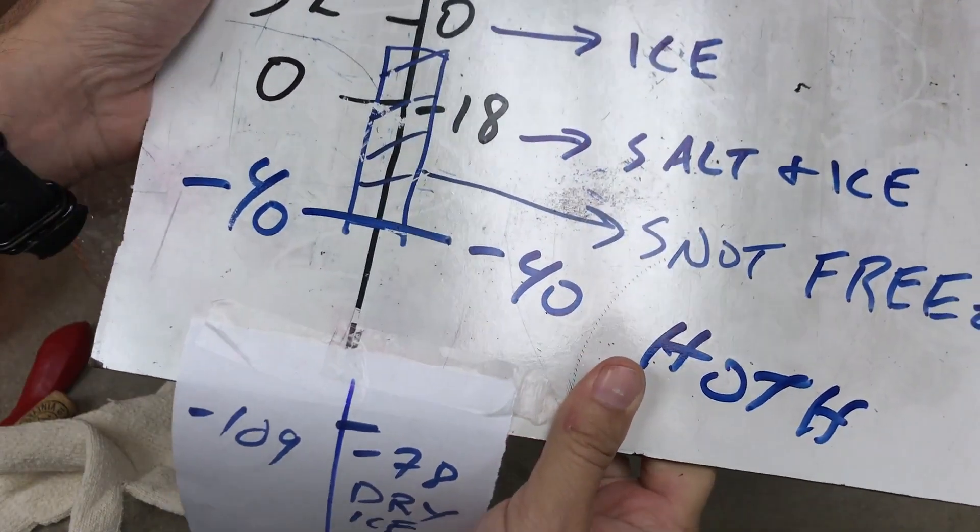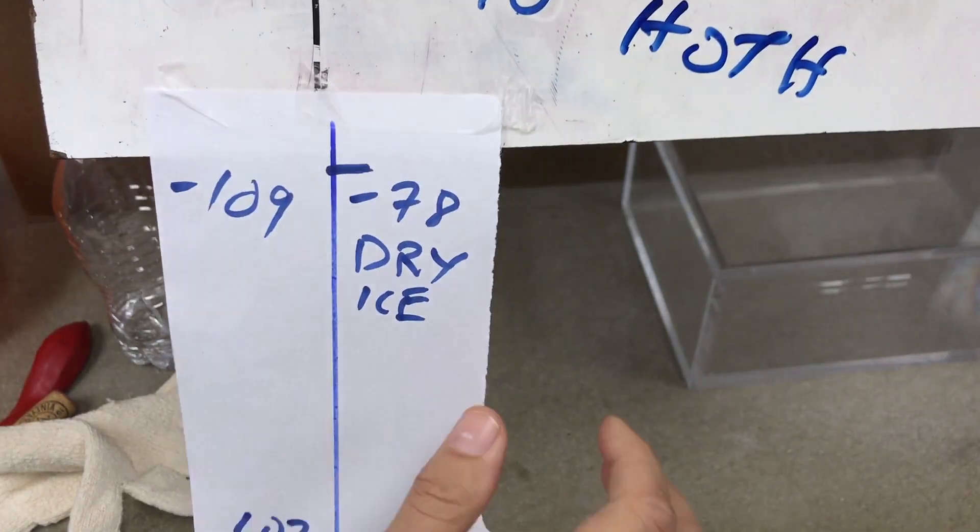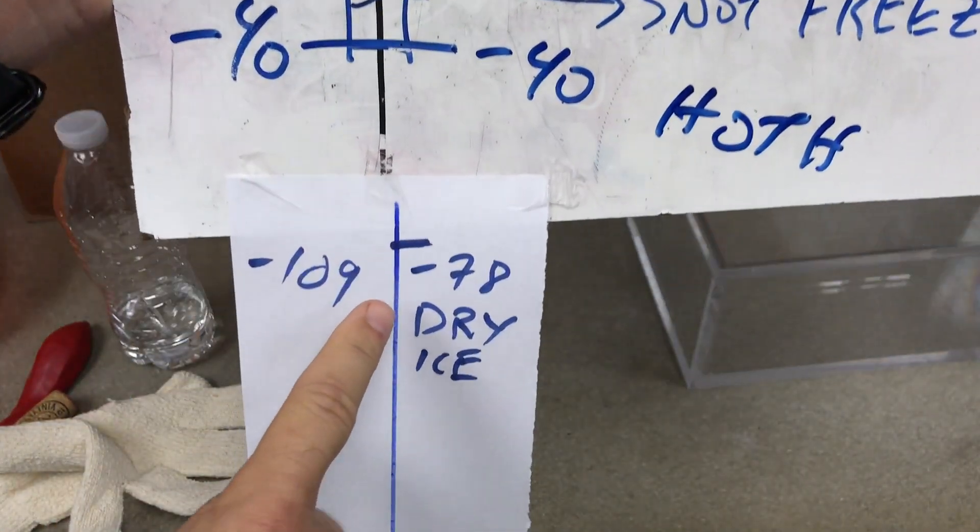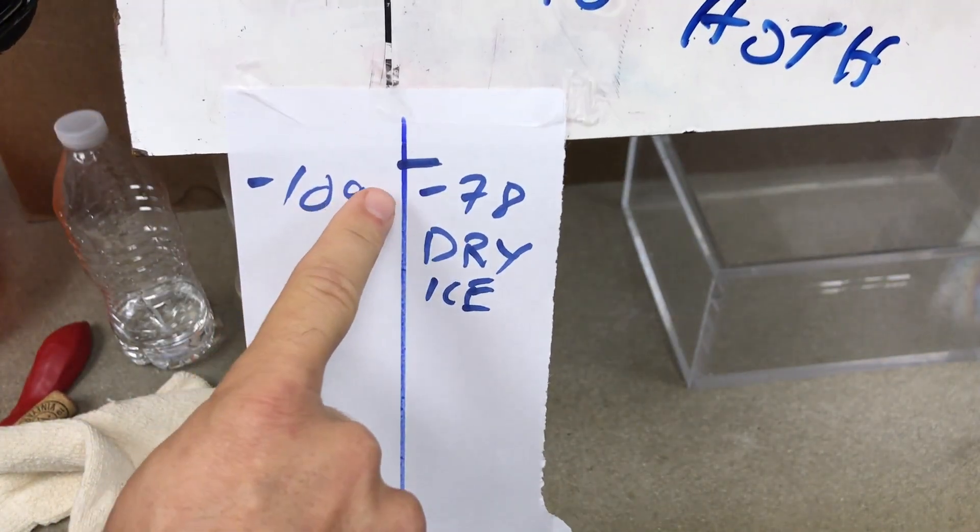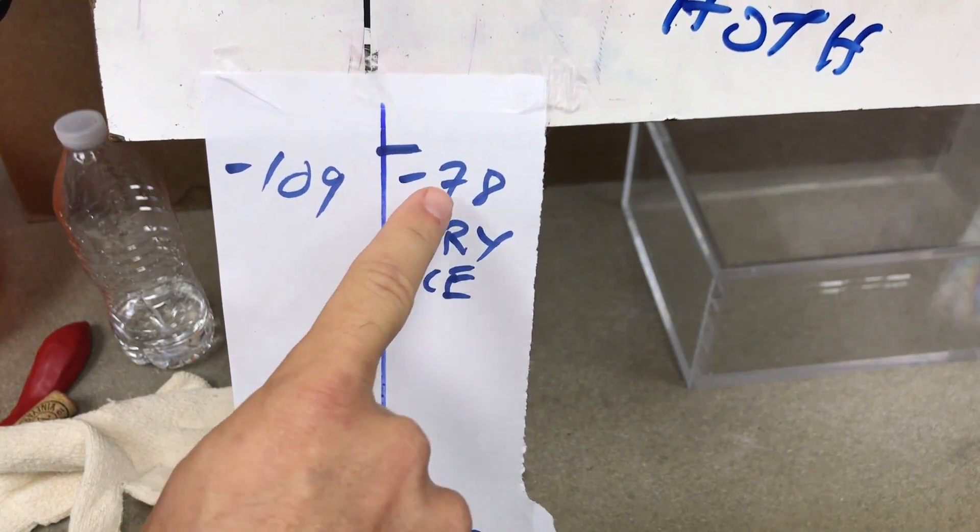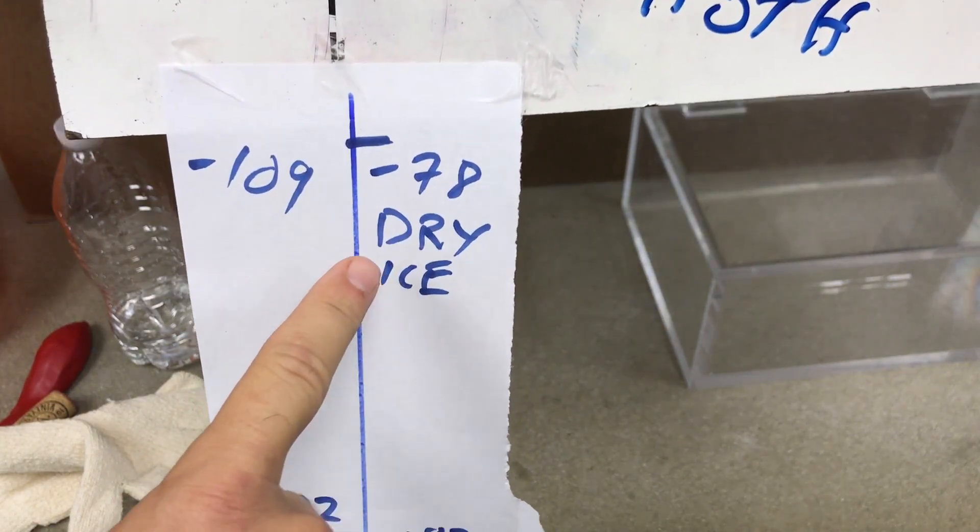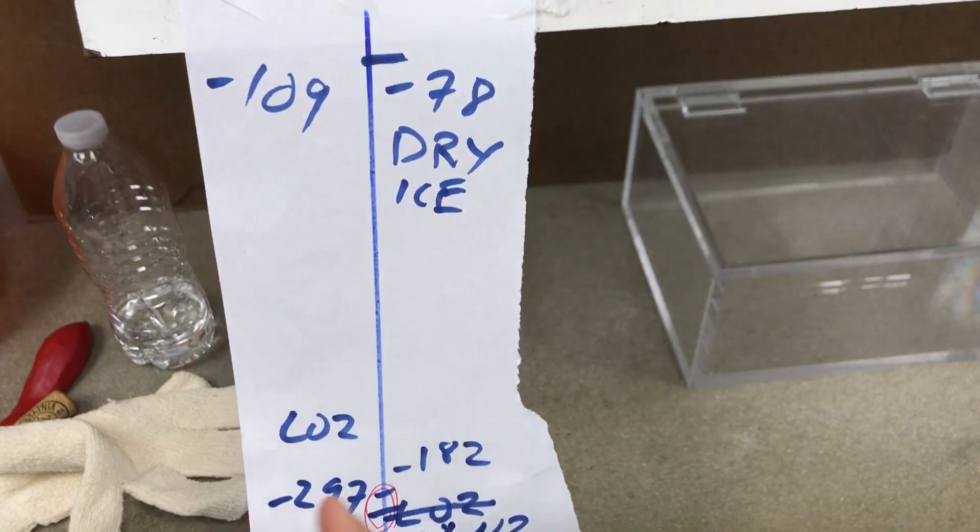So what if we go colder? I had to extend this down. Here we have negative 109, negative 78 Celsius. This is the temperature of dry ice. If you get dry ice, that's how cold that is.